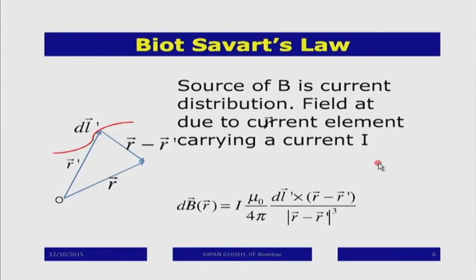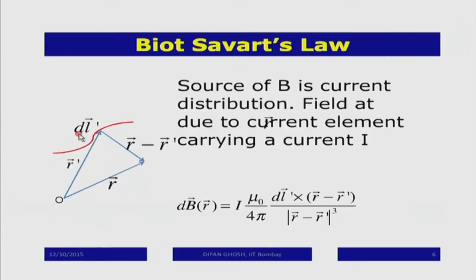Here is a wire through which current is moving. To calculate the magnetic field due to such a current, I split the current into small sections and define the direction in each small section by the tangent to the curve at that point — call it dL'. My origin is O, and the current element is located at vector r'. I am interested in finding the magnetic field at location r.